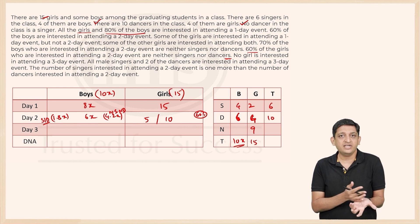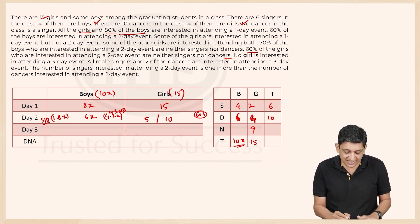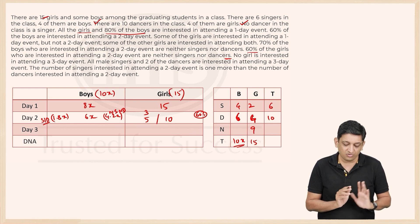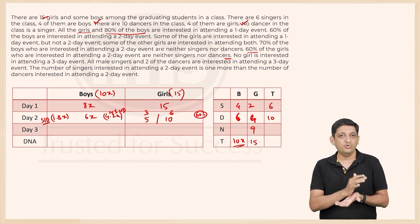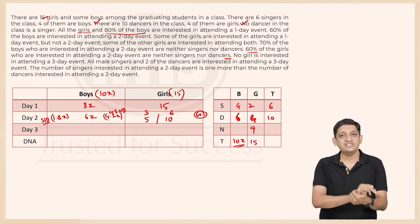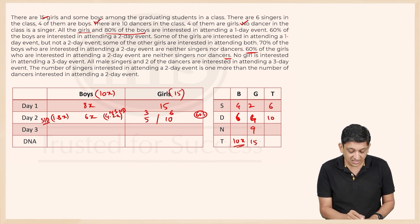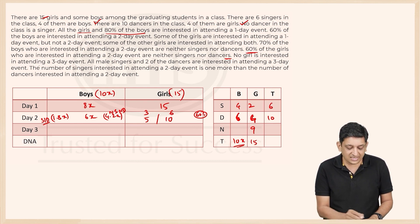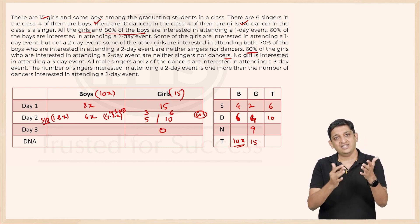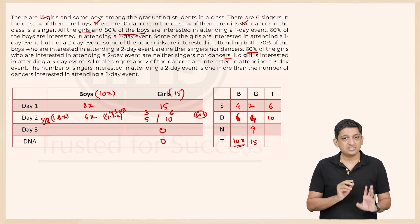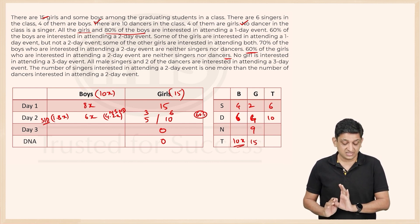If 5 girls are interested in the two-day event, 3 of them are neither singers nor dancers. If 10 girls are interested, 6 of them are neither singers nor dancers. No girl is interested in attending a three-day event, so that entry becomes 0. Since all girls are interested in at least a one-day event, no girl falls into the DNA category.